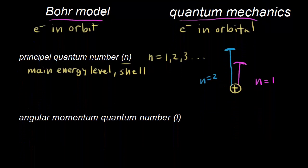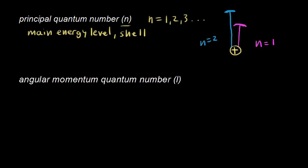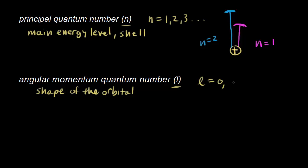The second quantum number is called the angular momentum quantum number, symbolized by L. L indicates the shape of the orbital. Values for L are dependent on n — they go from zero all the way up to n minus one.